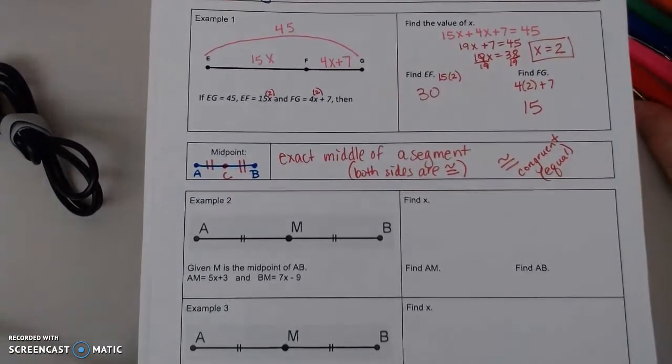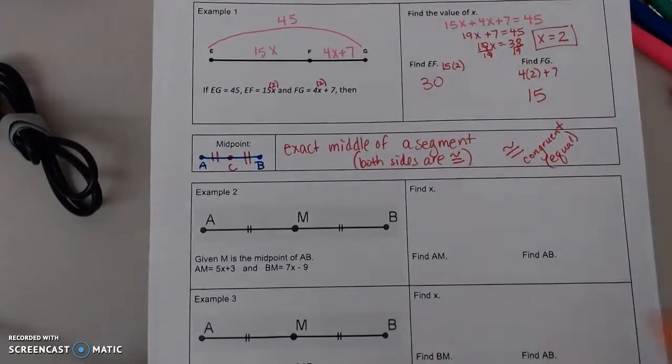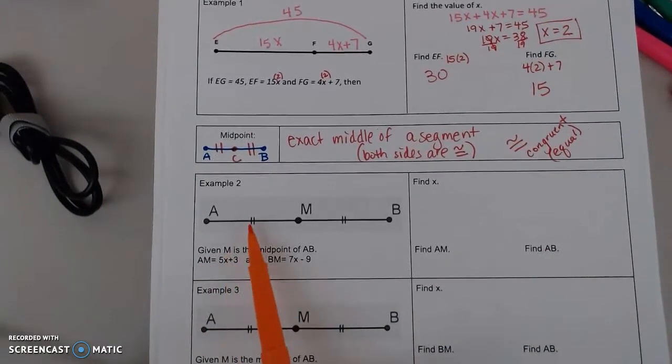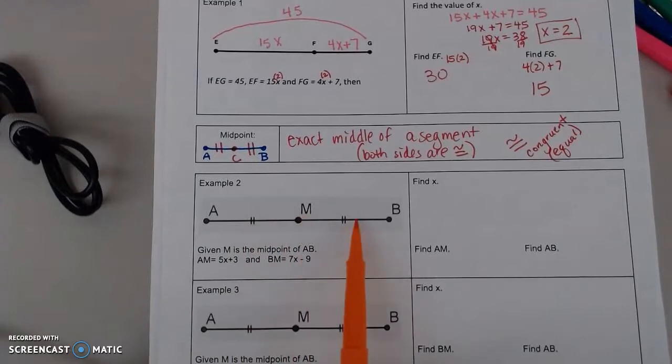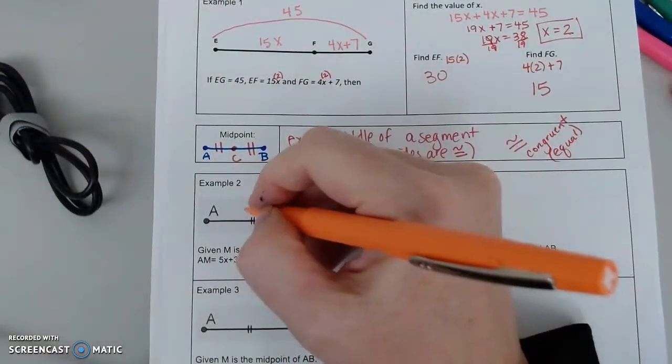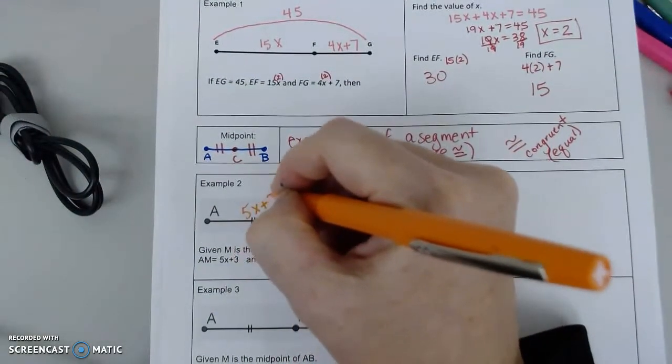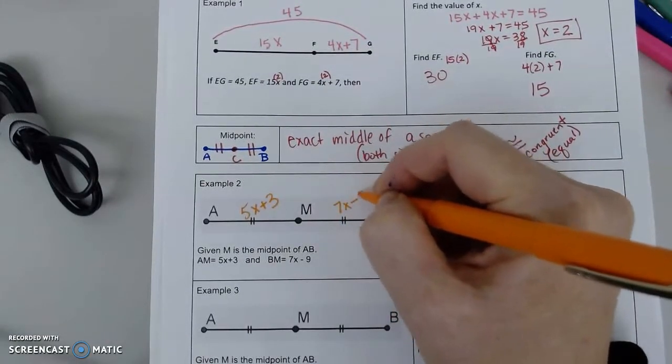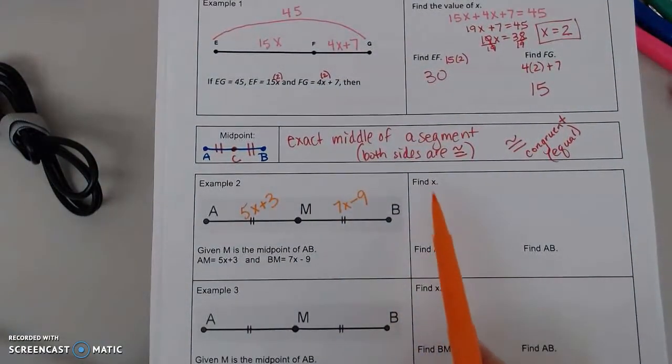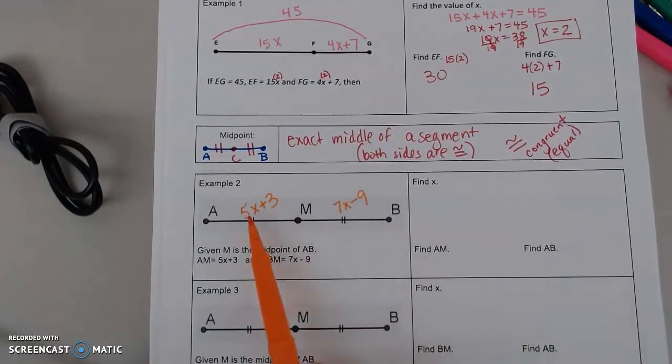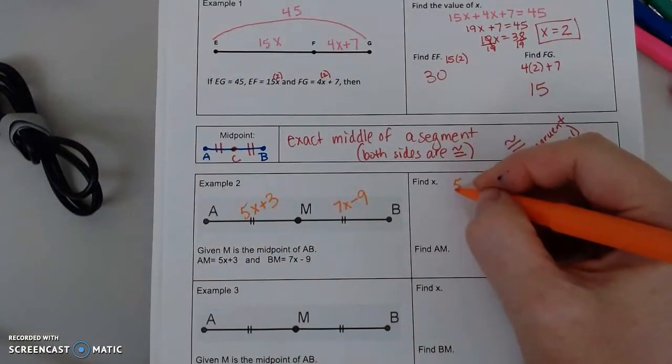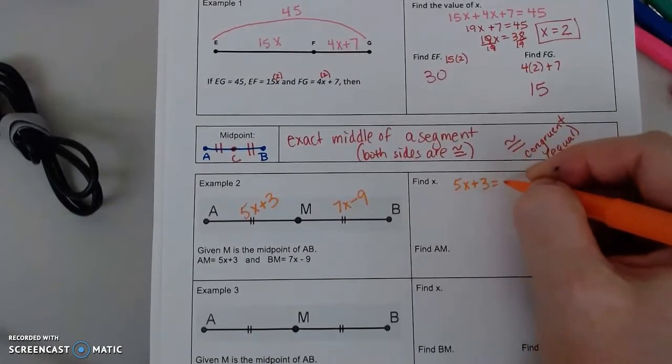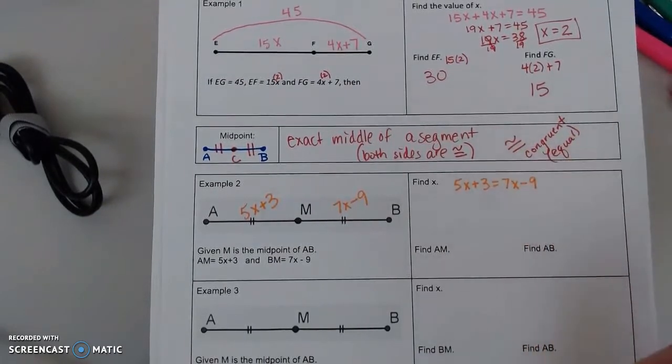So for example 2, it says that M is the midpoint. So they use two symbols to show those two sides are equal. We know that AM is 5X plus 3, and B to M is 7X minus 9. And we have three questions. So find X. Since I know that they're the same size, we can set them equal to each other. And then solve how you like.